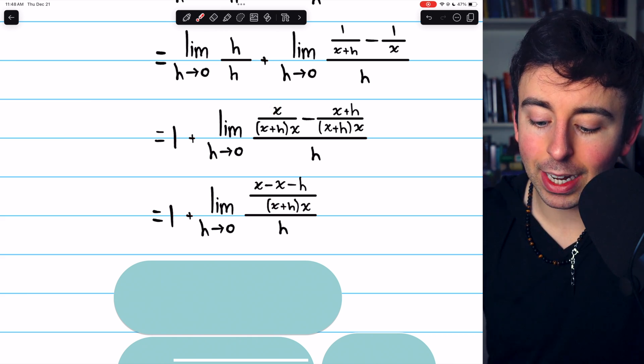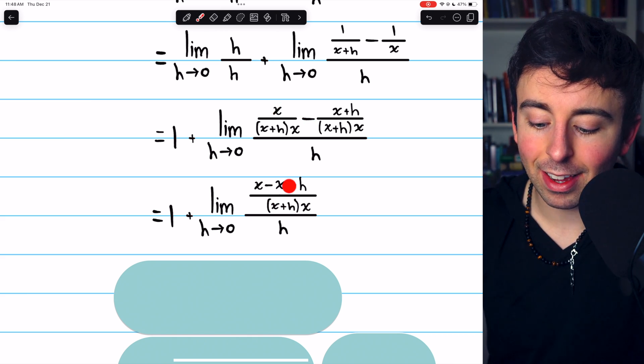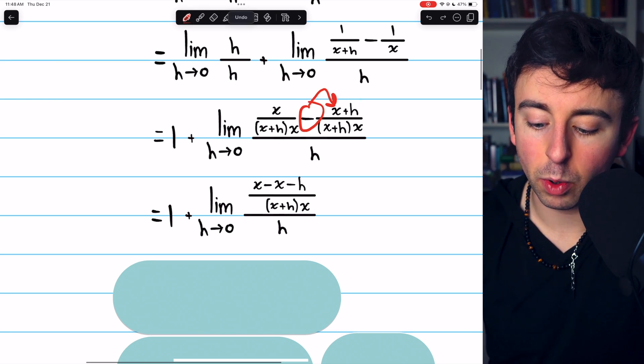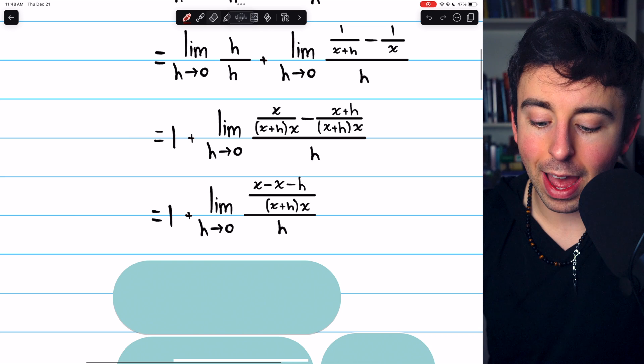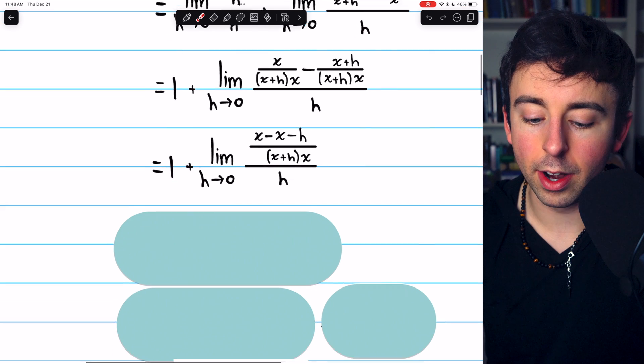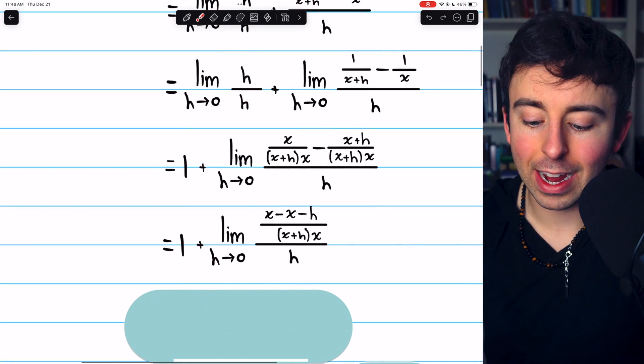But now we can combine the fractions. So we have all over x plus h times x, x minus x minus h. Remember that this negative distributes to both the x and the h. So when we combine the fractions, we have x minus x minus h. This whole thing is still getting divided by h, and we also still have that 1 from the h over h limit.